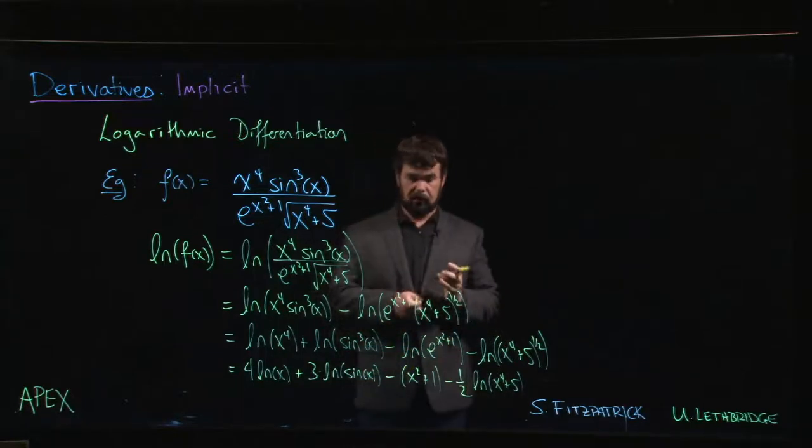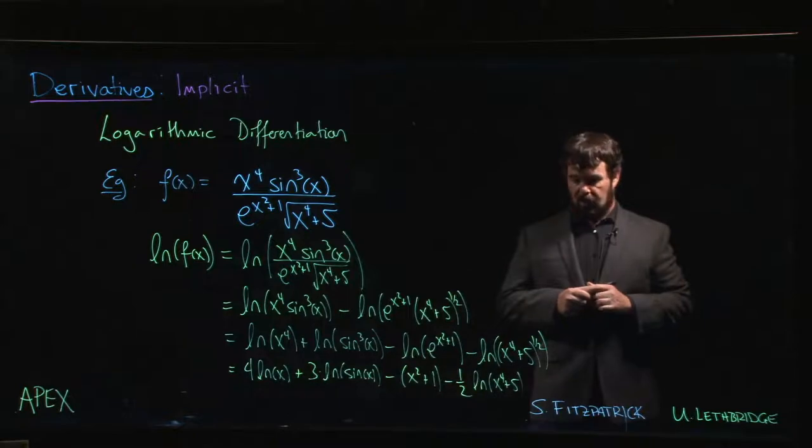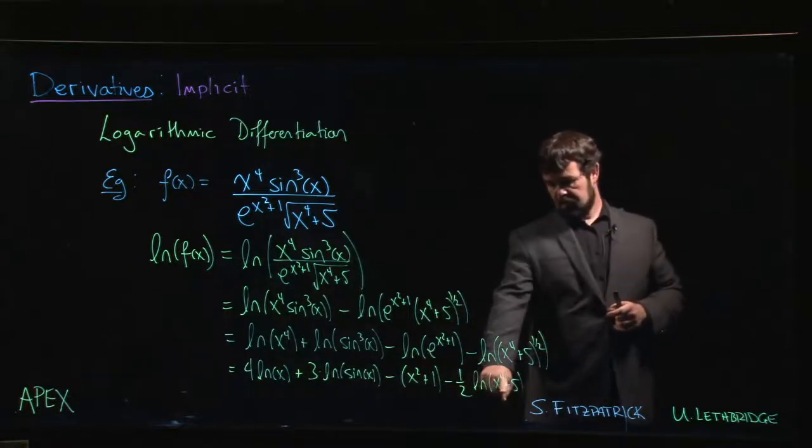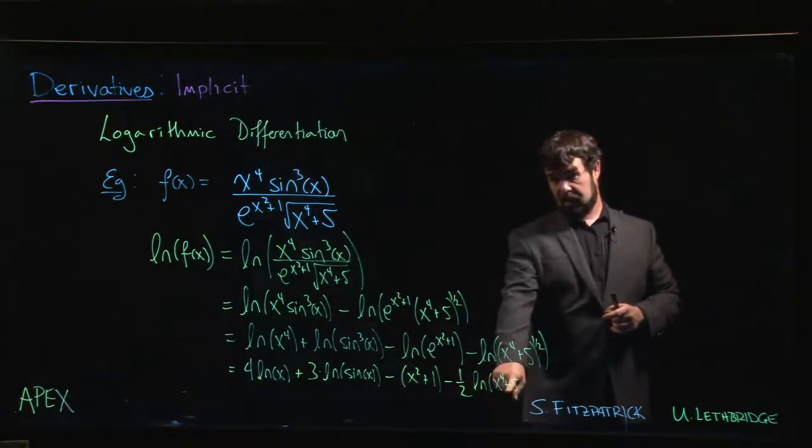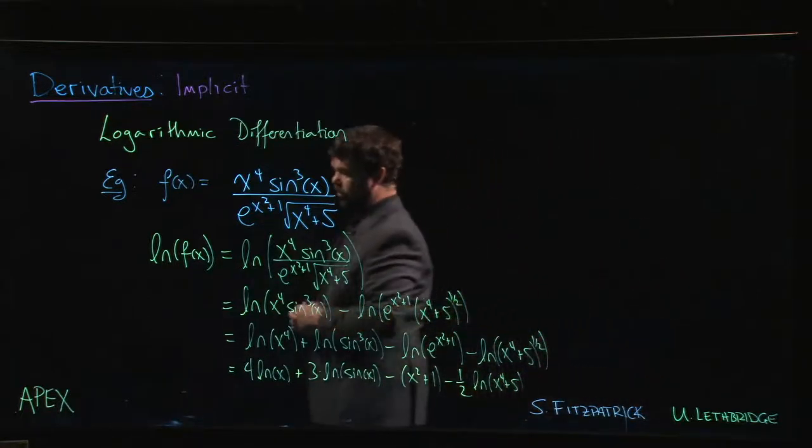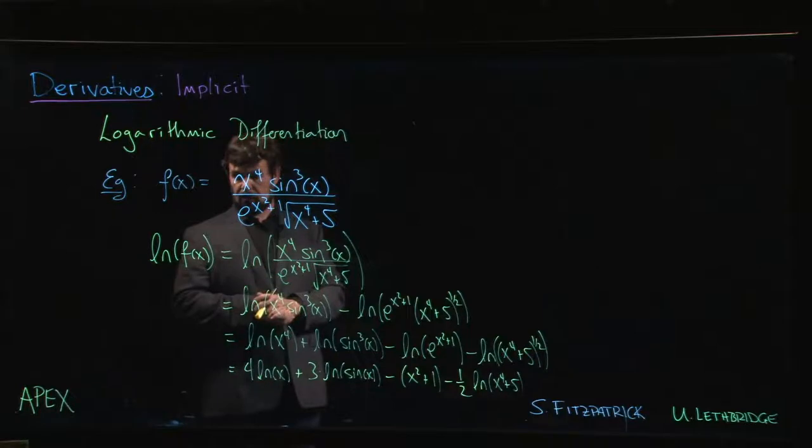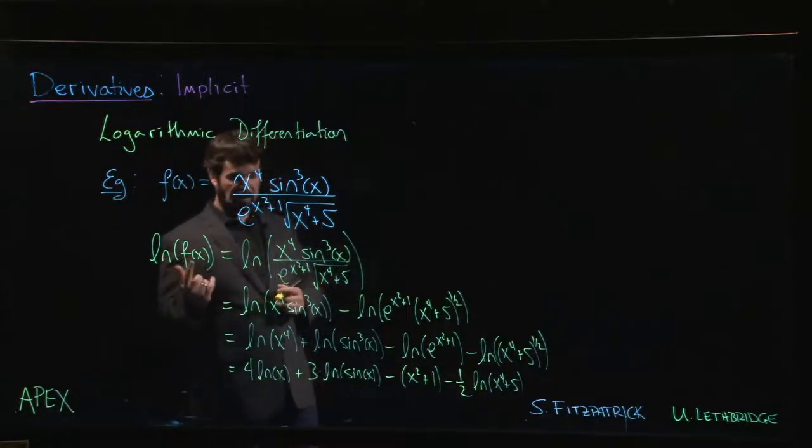And we're left with the natural log of x to the four plus five. One last note of caution: there are going to be a lot of you that are tempted to try and do something here, but you can't simplify that any further. There is no rule for the natural log of a sum. So now that we split that up, where do we go from here? Well, take the derivative of both sides, recognizing that we would much rather take the derivative down here than up here.